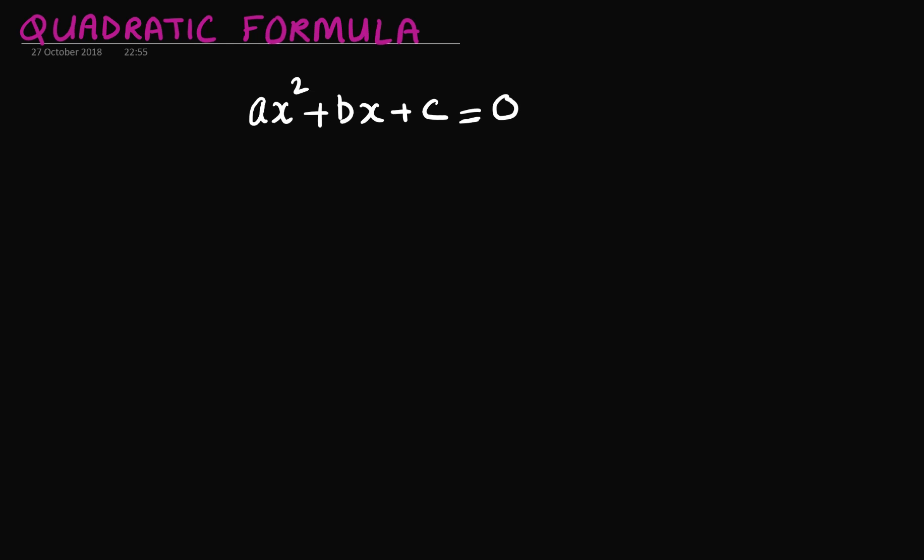Now, if I want to find out the root of this equation or the value of x for this equation, I can simply use a formula which says that x is equal to minus b plus or minus square root of b square minus 4ac, the whole thing divided by 2a.